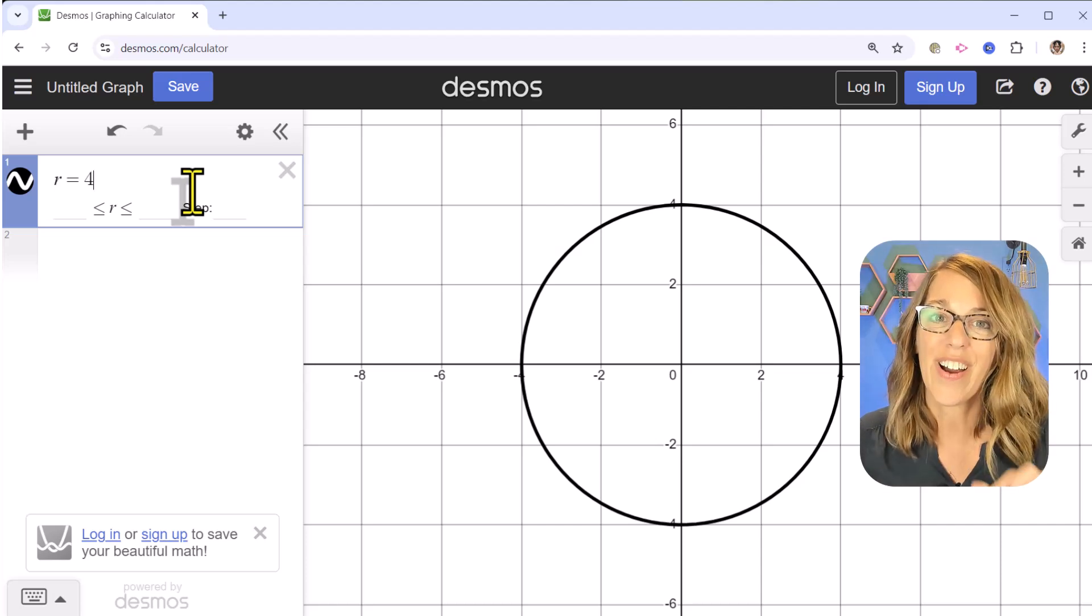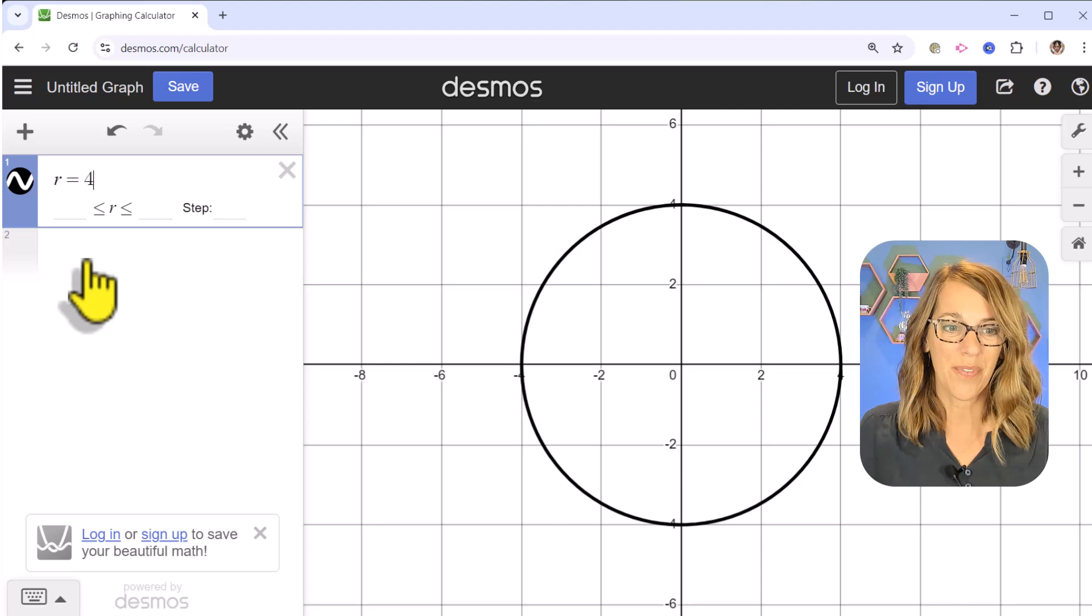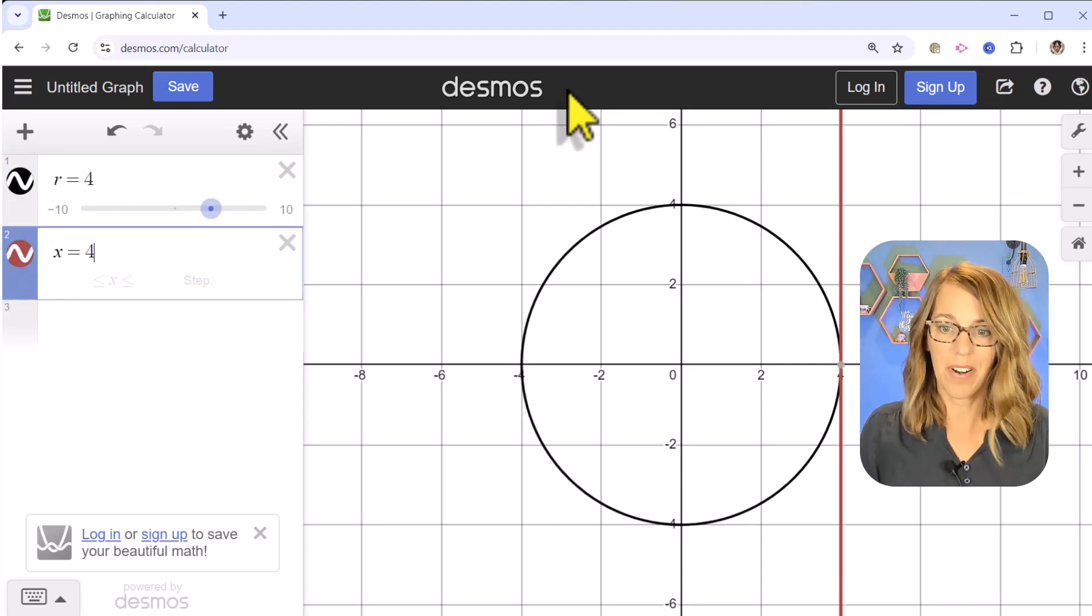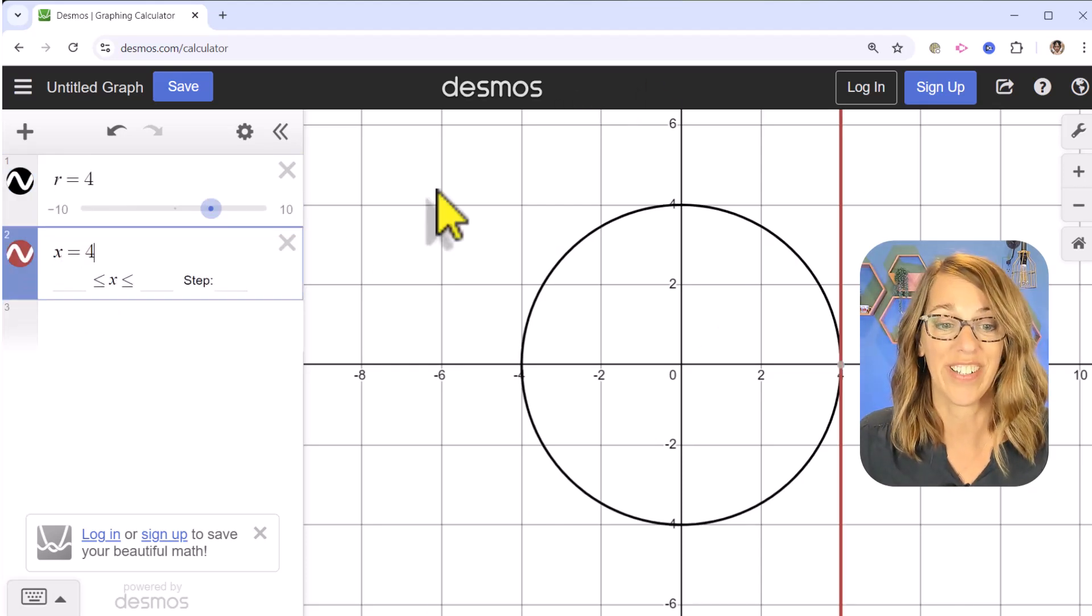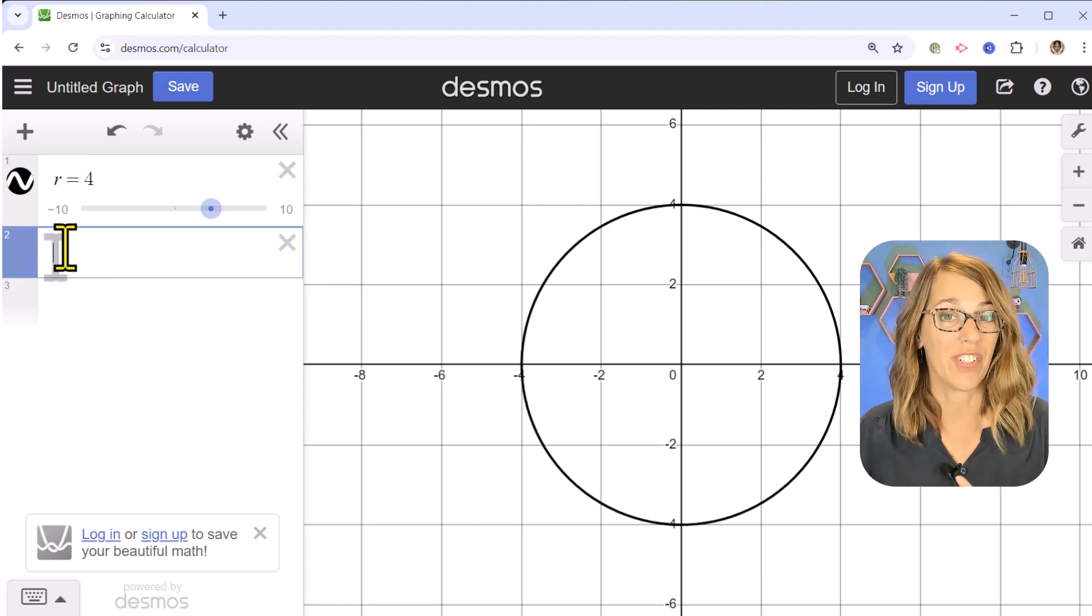Desmos recognized R as the polar coordinate R, because if I were to have graphed like X equals 4, it would instead graph a straight line. Let me get rid of this.